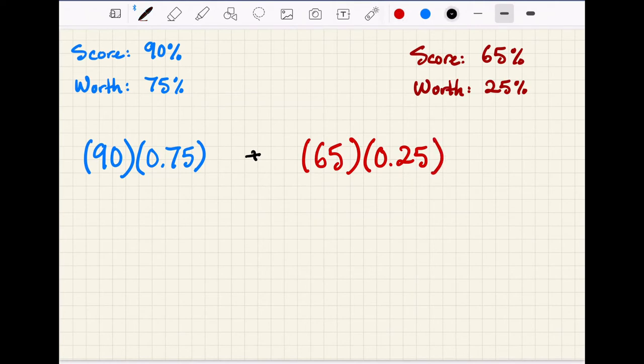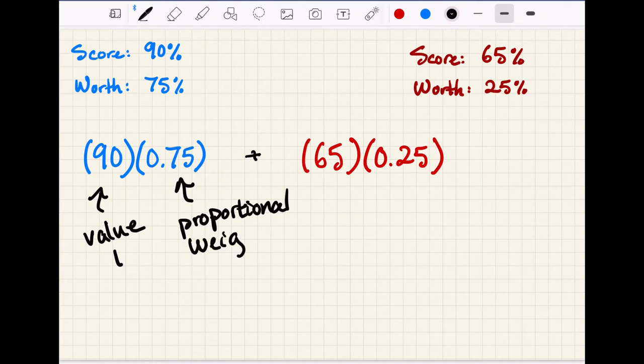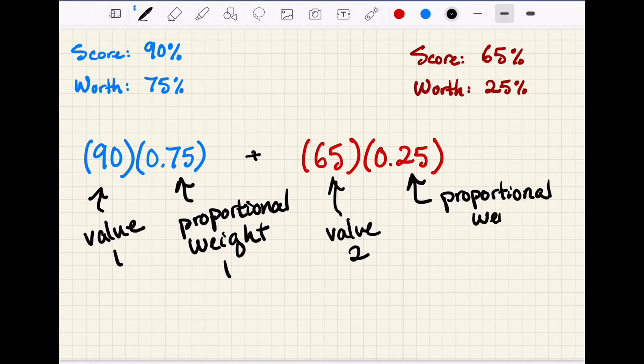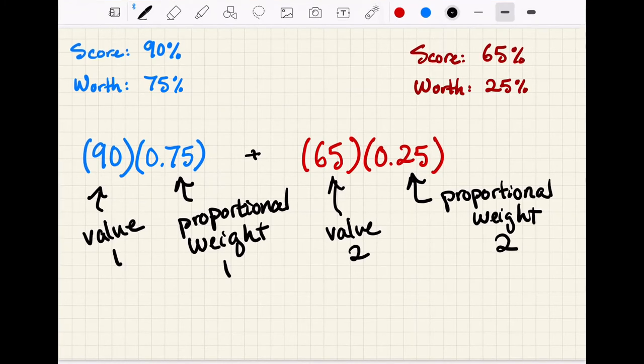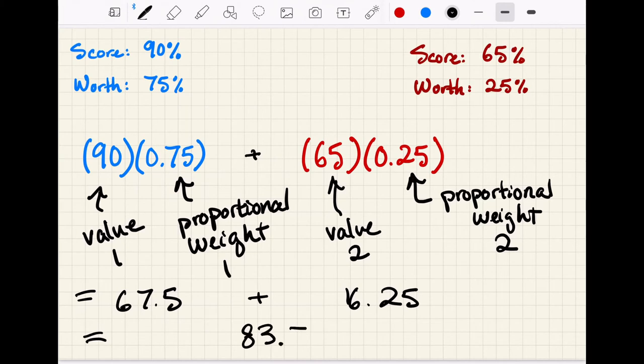And so again, what this means is that we have a value number one, and then we have a proportional weight assigned to that value. Same thing on our component number two, we have a value which is assigned a proportional weight. So if we do that math, this looks like 67.5 plus 16.25 equals 83.75. So that is actually your final grade in the class, which is pretty decent.